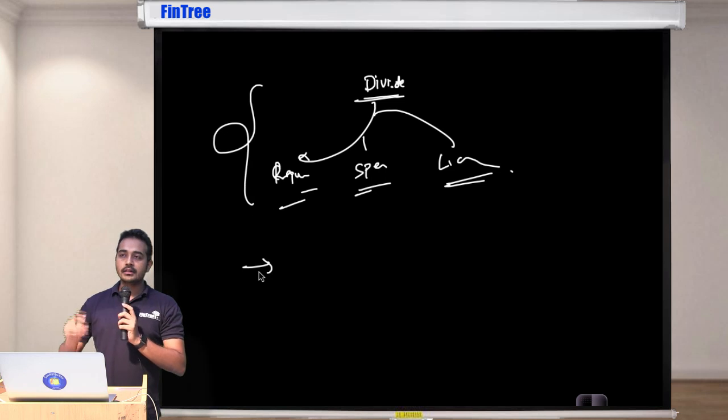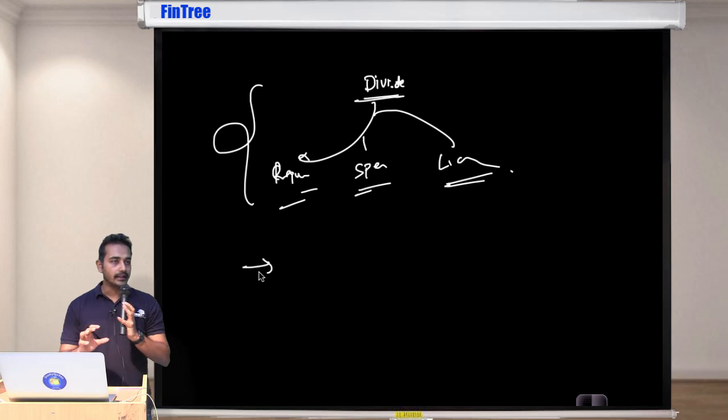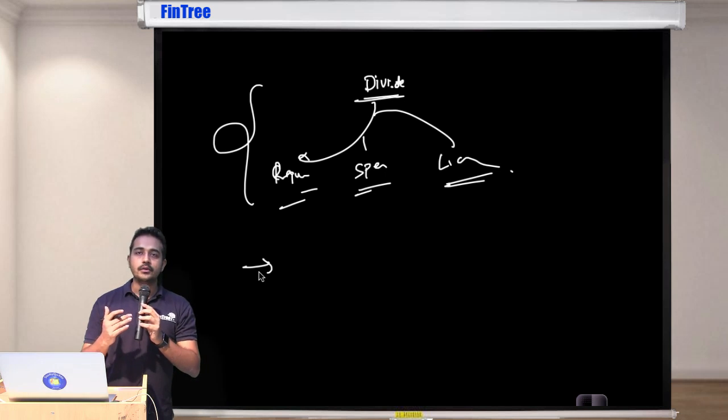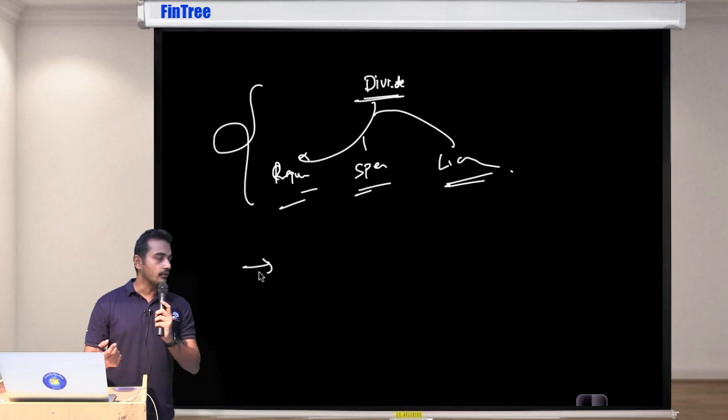Then did we also learn that when a stock goes ex-dividend in theory value of the stock will reduce by the amount of dividend. For example stock price is 50, dividend per share is let's say 5, so the date on which stock was ex-dividend you would expect the stock price to be 45.